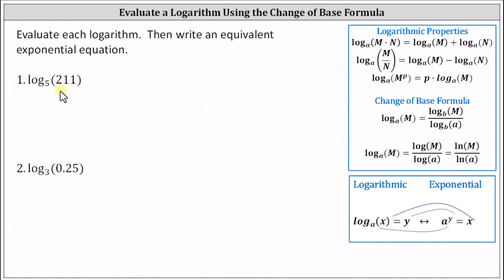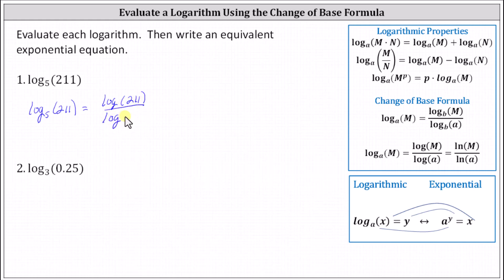To evaluate log base five of 211, if we want to use common log, applying the change of base formula we have log base five of 211 equals common log of 211 divided by common log of five. And now we'll go to the Desmos Scientific Calculator to determine this quotient using common log.